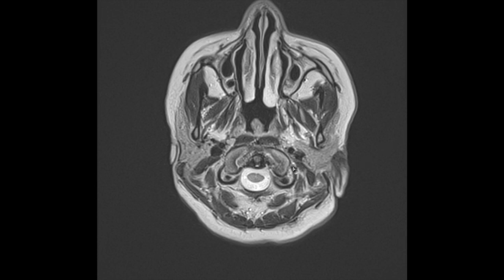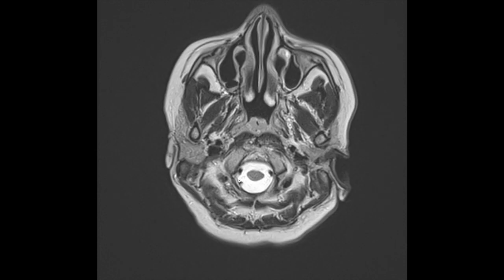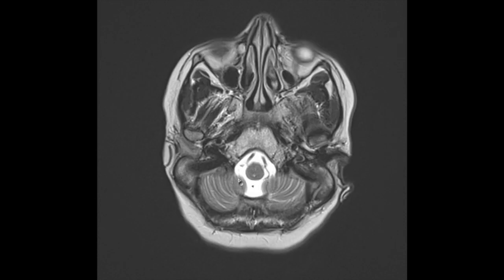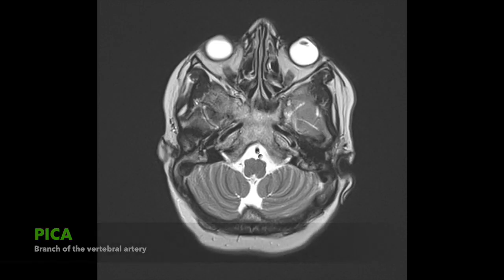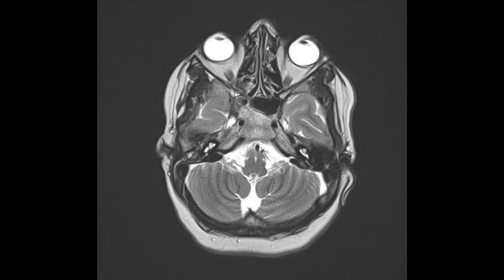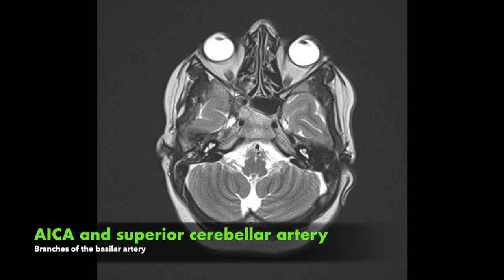Now we'll go through some arterial anatomy. What we see here are the vertebral arteries coming up, and just before they form the basilar artery you can see they give off the PICA — the posterior inferior cerebellar artery. They then form the basilar artery, and coming off the basilar artery is the AICA — the anterior inferior cerebellar artery. It's quite a thready artery so you don't always see it, and it's certainly less conspicuous than the PICA.